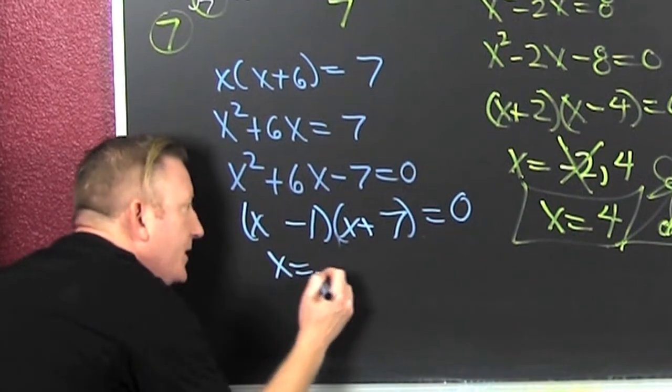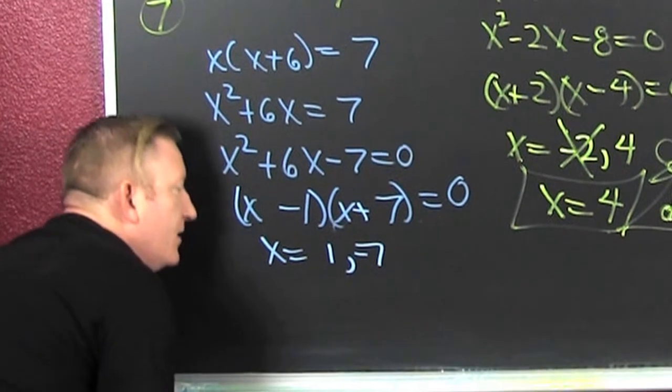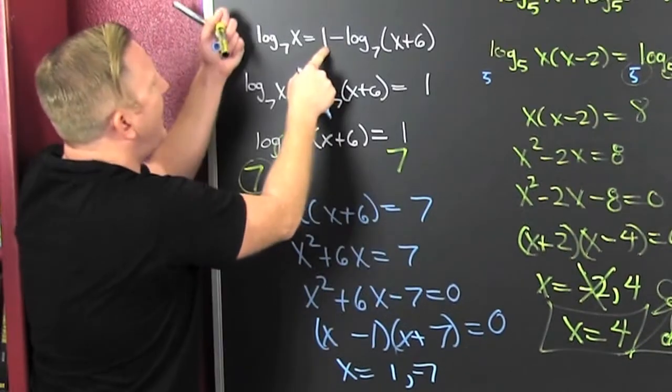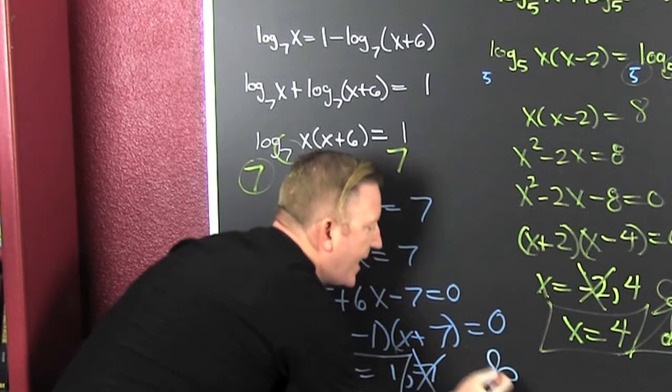And I find that my x are going to be equal to 1 and a negative 7. But wait, you have to check it. I can't take the log of a negative. So you're out and you're in. Box and flower.